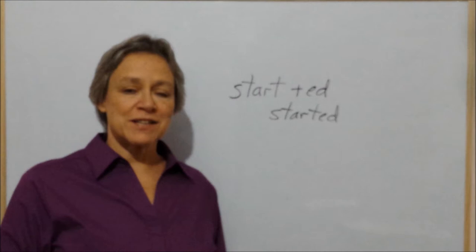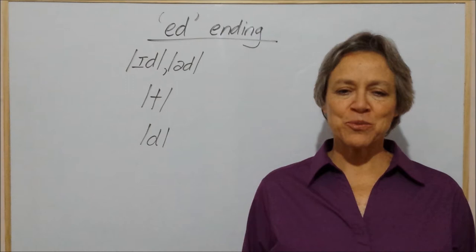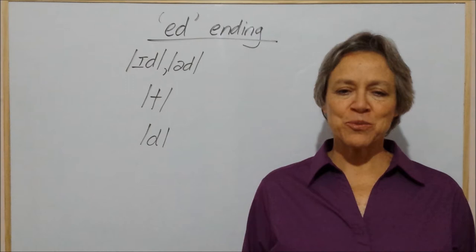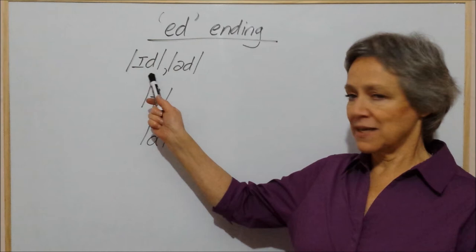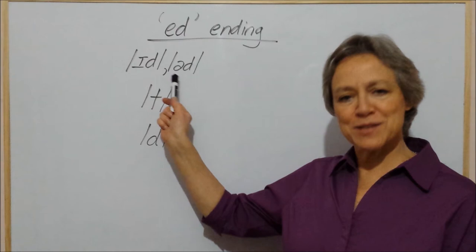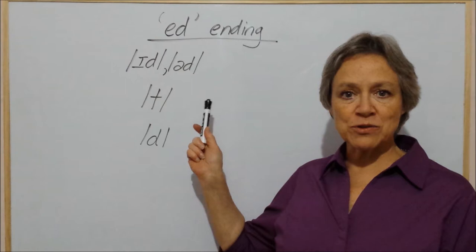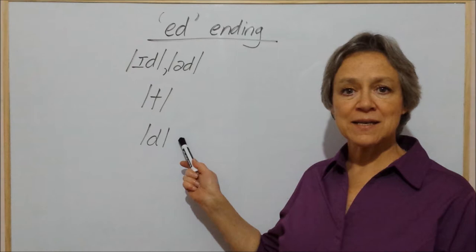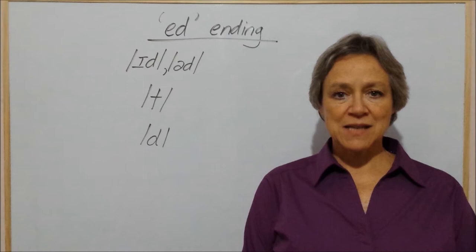But the question is how do we pronounce this ed? There are three main ways to pronounce the ed ending. We can pronounce it as /ɪd/ or /əd/, we can pronounce it as /t/, and we can pronounce it as /d/. The pronunciation we use depends on the last sound of the verb that we attach the ed ending to.